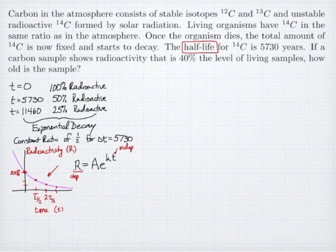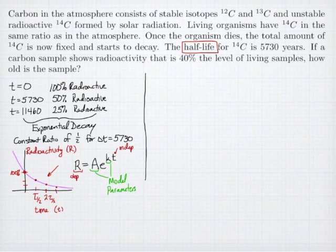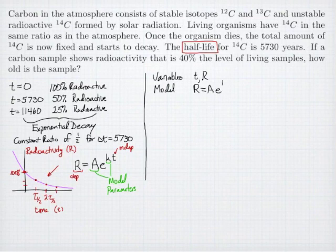Here a and k are what we call model parameters. Once we've identified what kind of model we're working with and we've identified our variables, we have our variables t and r, and we have our model r equals ae to the kt.